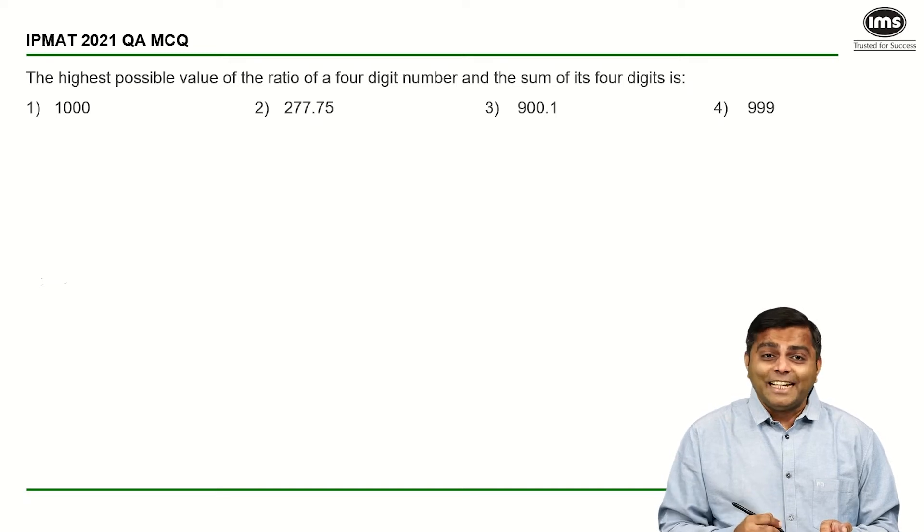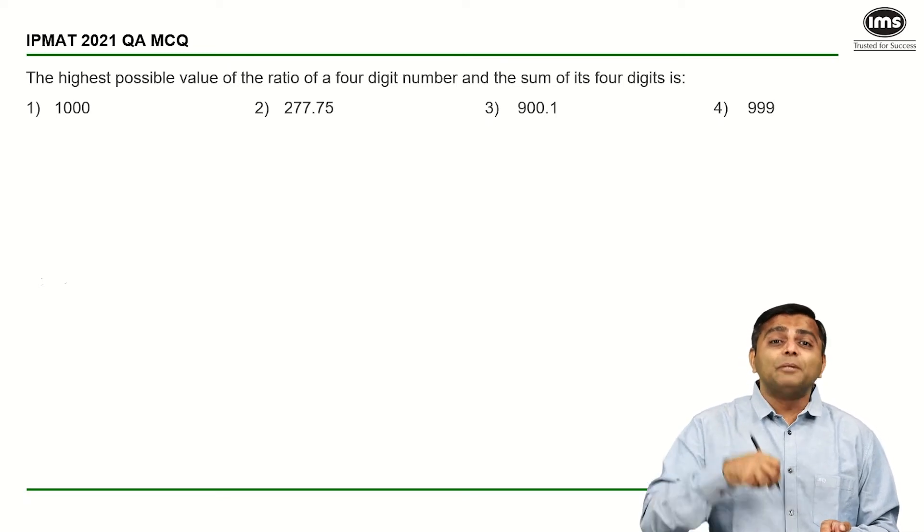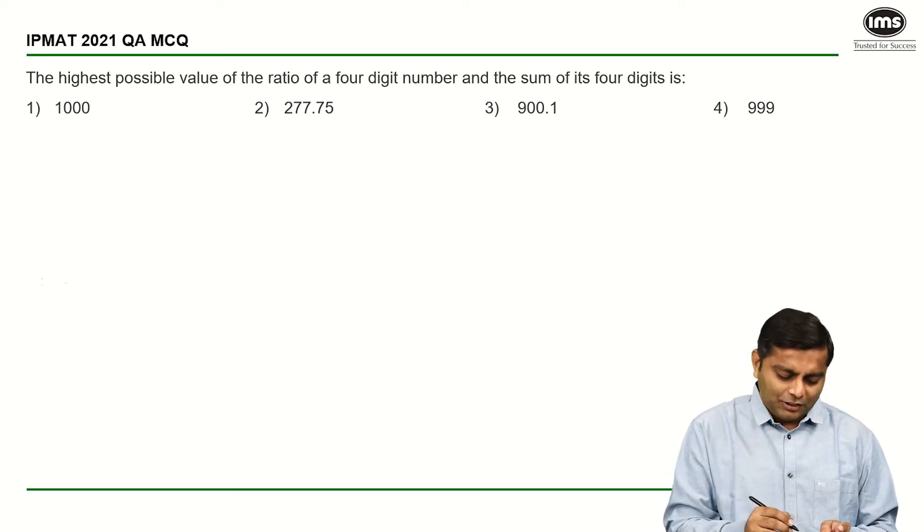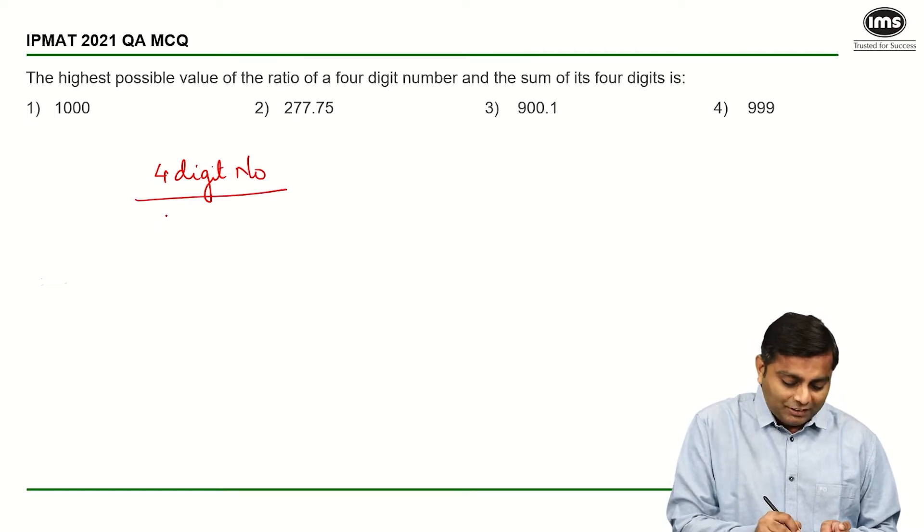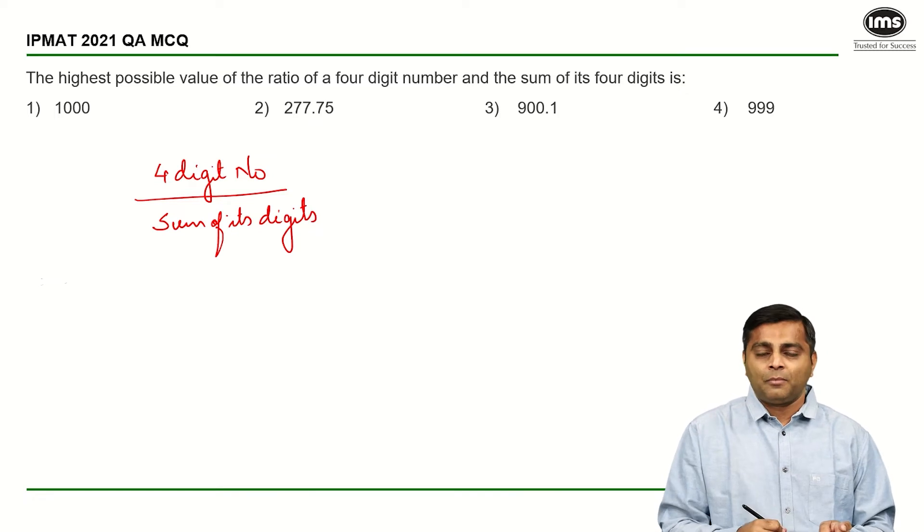Okay, so what have they said? They want us to maximize the ratio, the highest possible ratio of a four-digit number upon the sum of its digits. Now, this is what we want to maximize.